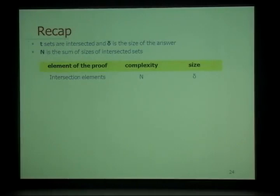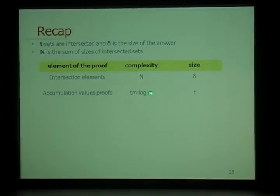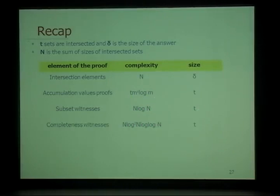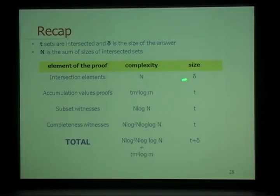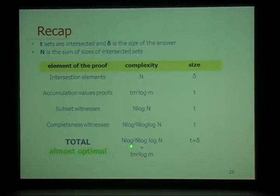The complexity of our method: computing the intersection takes O(n) time with output size delta. Computing accumulation value proofs takes O(m^ε log m) time with size t. Subset witnesses take O(n log n) time with size t (using fast polynomial operations). Completeness witnesses use the extended Euclidean algorithm with size t. The total proof size is t + delta — where t is the number of queried sets and delta is the size of the intersection — which is almost optimal. The extra logarithmic cost comes from proof computation, but in terms of proof size, it is optimal.